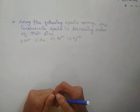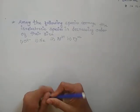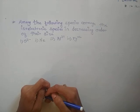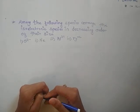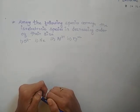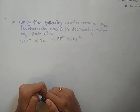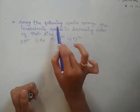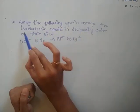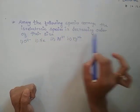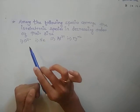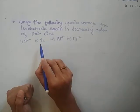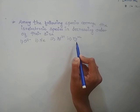Hi, welcome to our YouTube channel. In this video, we will discuss a question asked in certain exams related to isoelectronic species. The question is: Among the following species, arrange the isoelectronic species in decreasing order of their size: O2-, Ne, Al3+, and Mg2+.